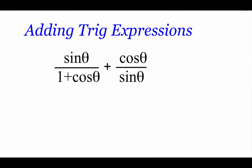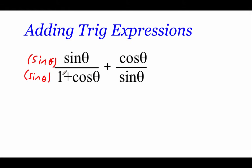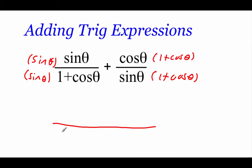In this first example, we're looking at adding up some trig expressions. What I want you to notice is they're both fractions, and just like any other fraction, before we can add those things together, we have to have common denominators — and right now we don't. So on the left-hand side I'm going to multiply this fraction top and bottom by the sine of theta, and with our right-hand fraction I'm going to multiply by 1 plus the cosine of theta on top and on bottom.